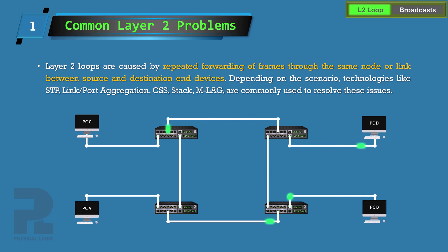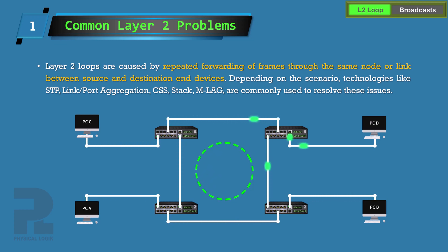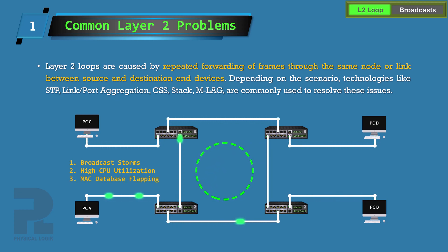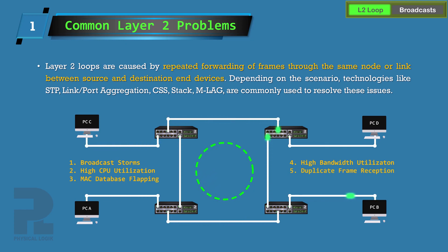A ring topology such as this one is a perfect example. Broadcast or unknown unicast traffic could be flooded across this loop causing broadcast storms, high CPU resource utilization, MAC address database flapping, high utilization of network bandwidth, and duplicate frame reception by hosts connected to switches in this loop.